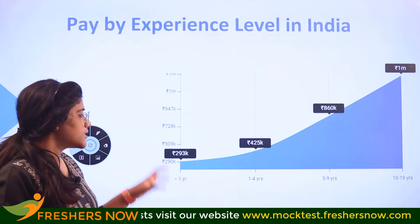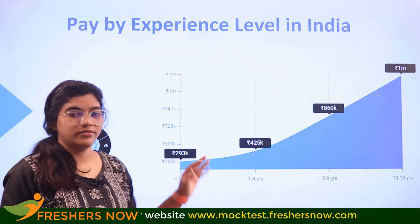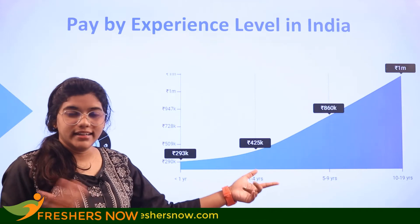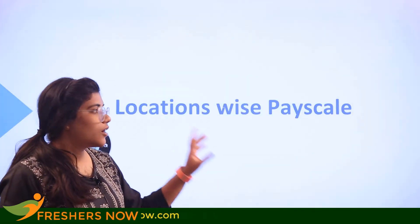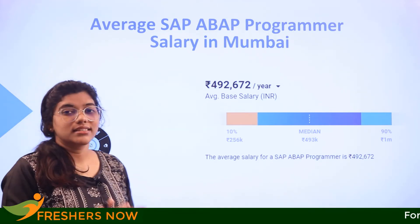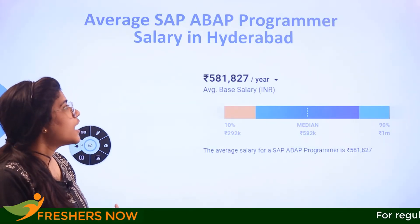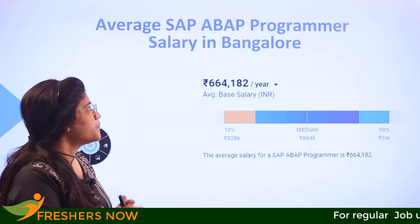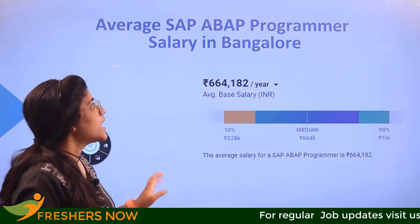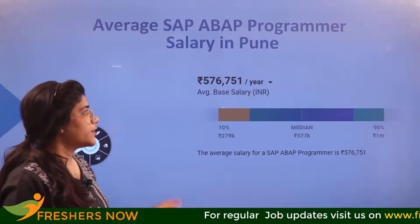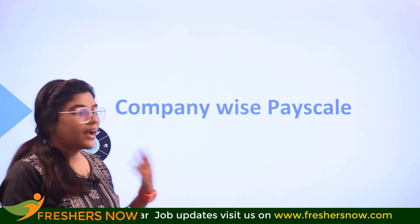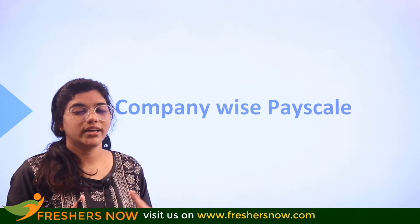The professional growth graph shows a steady increase from year one to year five, with a significant leap of growth around the ten-year mark. Looking at salaries by location: Mumbai pays 4,92,000 per annum; Hyderabad 5,81,000; Bangalore tops at 6,64,000; Pune at 5,76,000; and Noida at 4,63,000 per annum.